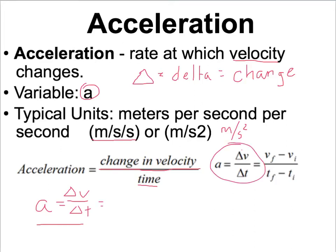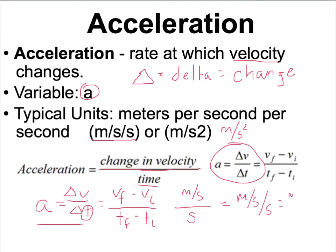We could write that a different way: change in velocity is our final velocity vf minus our initial velocity vi, divided by the final time minus the initial time. You'll probably just be given a time and won't have to do final minus initial, but for velocity you'll be given problems where you'll need to know final and initial. If you look at the units for velocity — meters per second — and divide by time in seconds, those seconds can't cancel out, and what you end up with is meters per second per second, or meters per second squared.